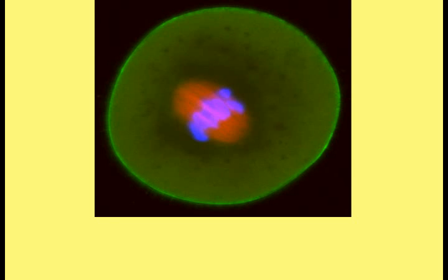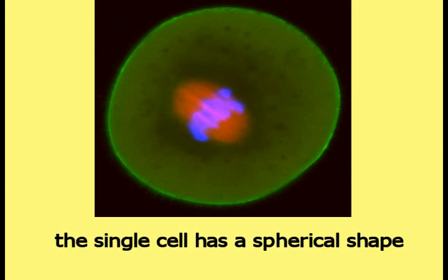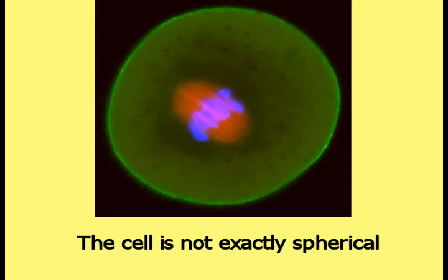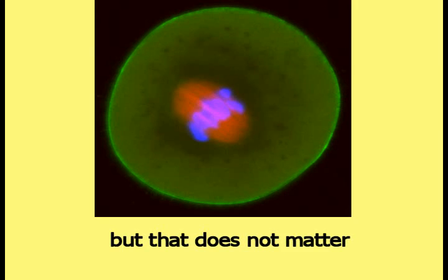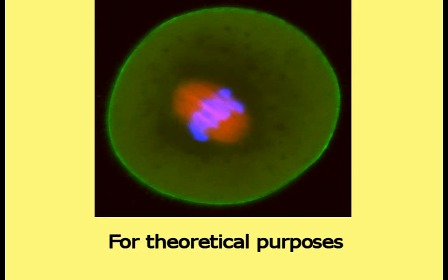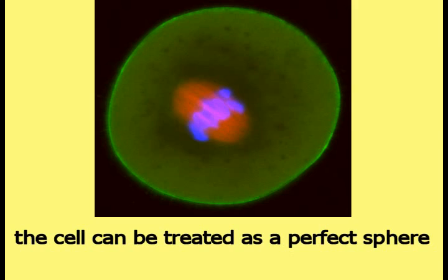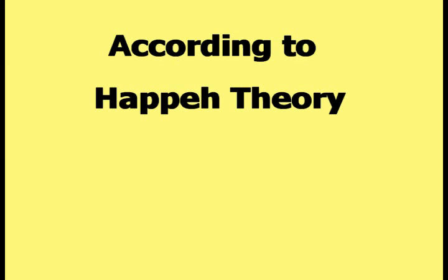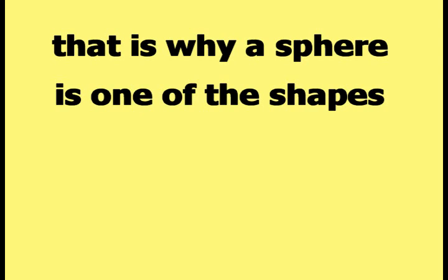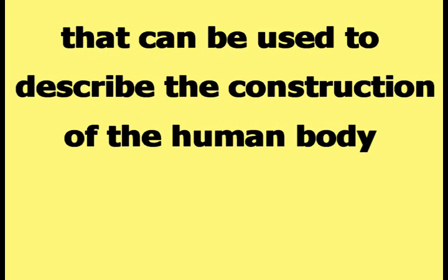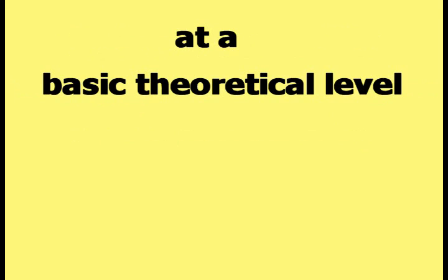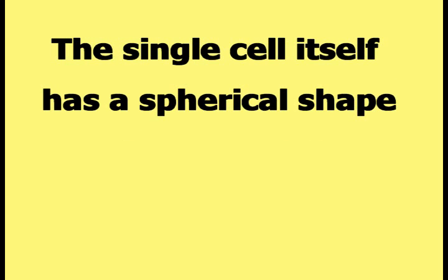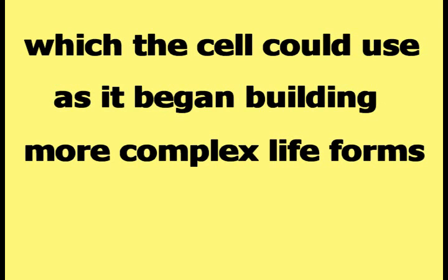Here is a colorized photograph of a single cell. As can be seen, the single cell has a spherical shape. The cell is not exactly spherical, but that does not matter. For theoretical purposes, the cell can be treated as a perfect sphere like the one shown in this comparison picture. According to Happy Theory, that is why a sphere is one of the shapes that can be used to describe the construction of the human body at a basic theoretical level — the single cell itself has a spherical shape, which it could use as it began building more complex life forms.